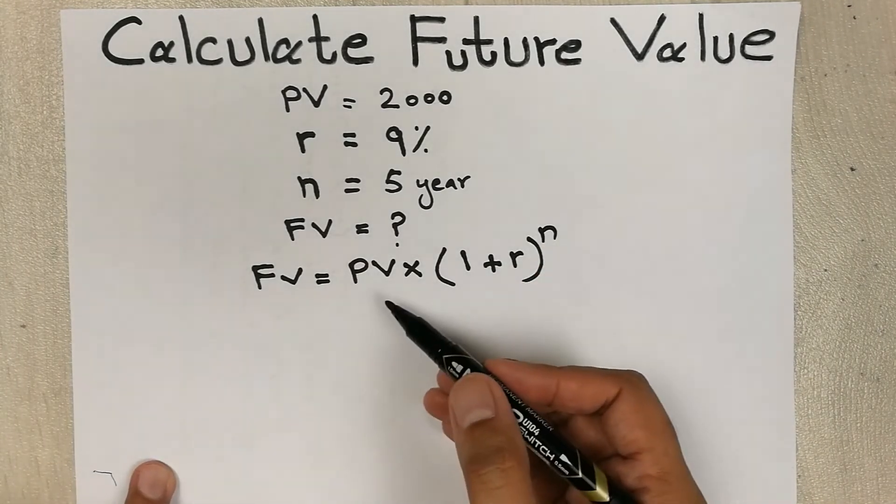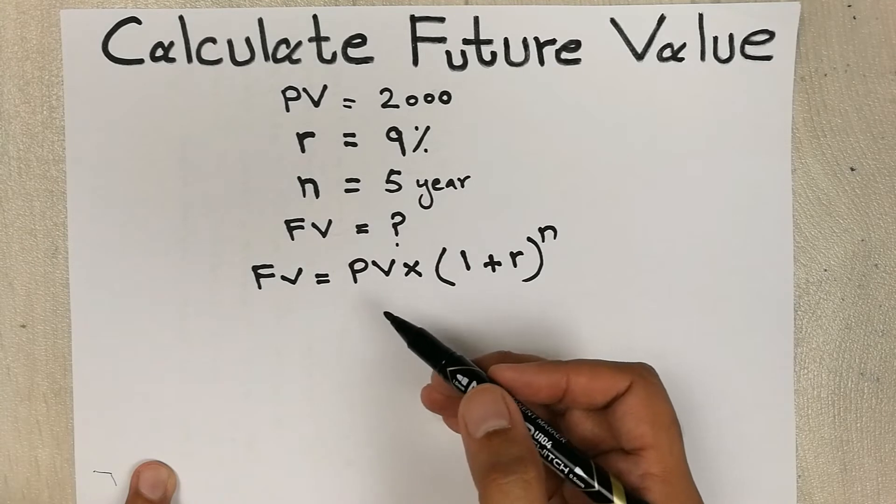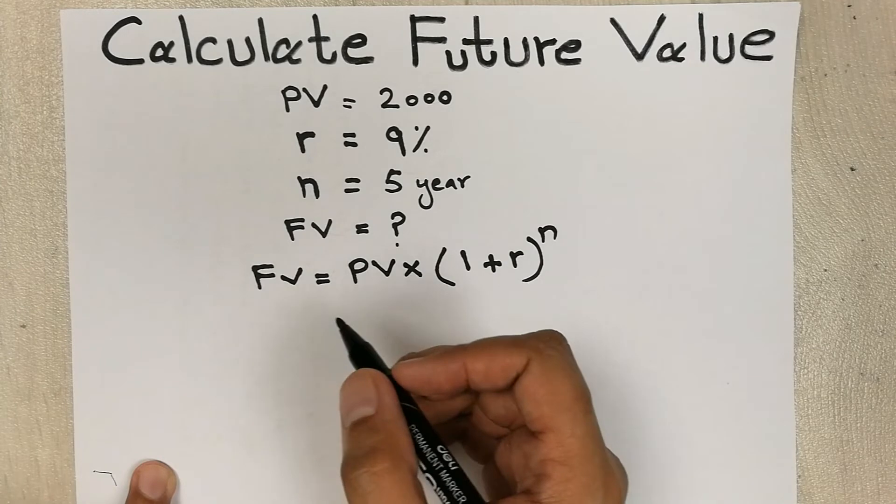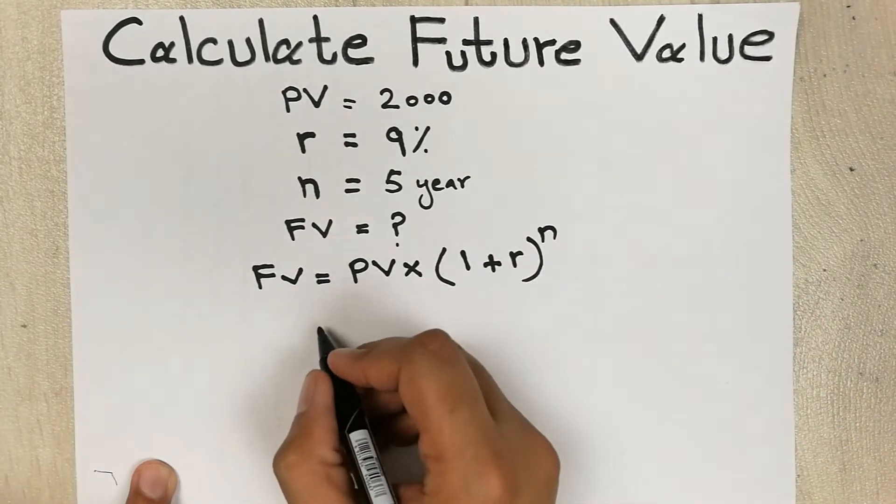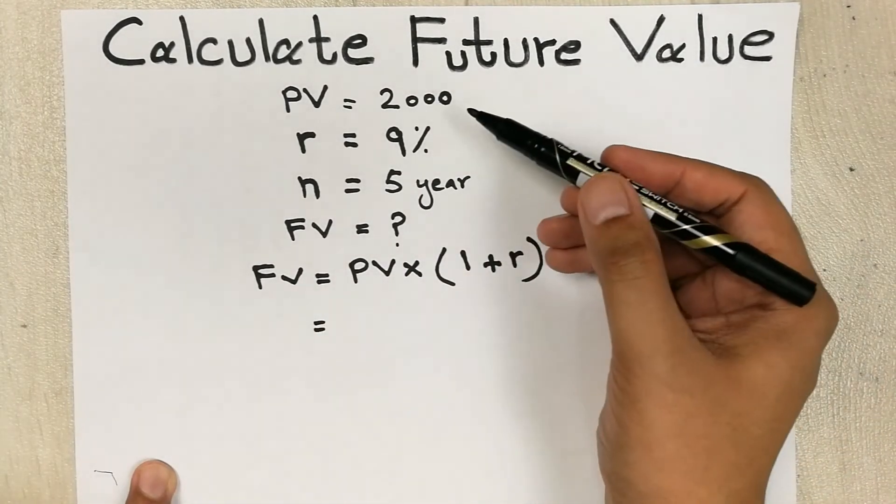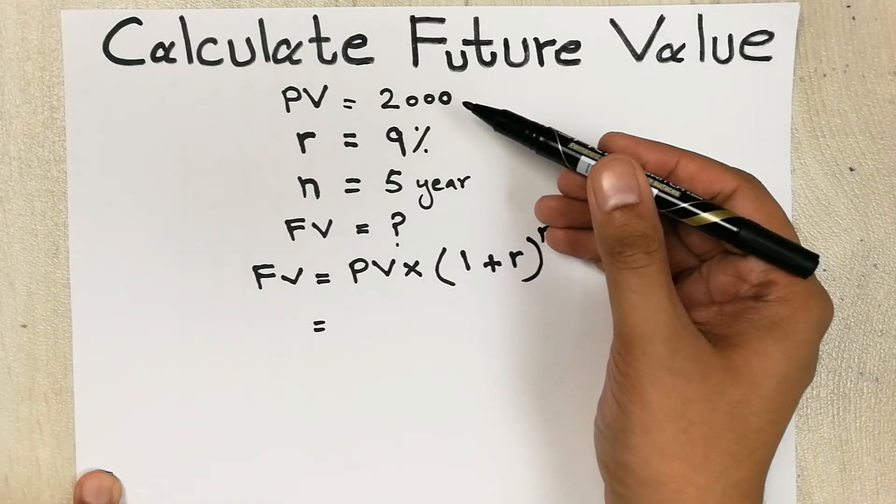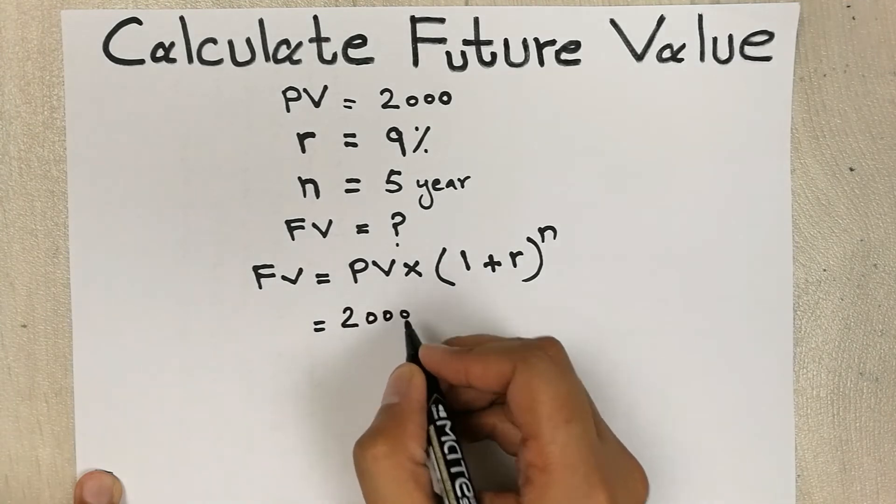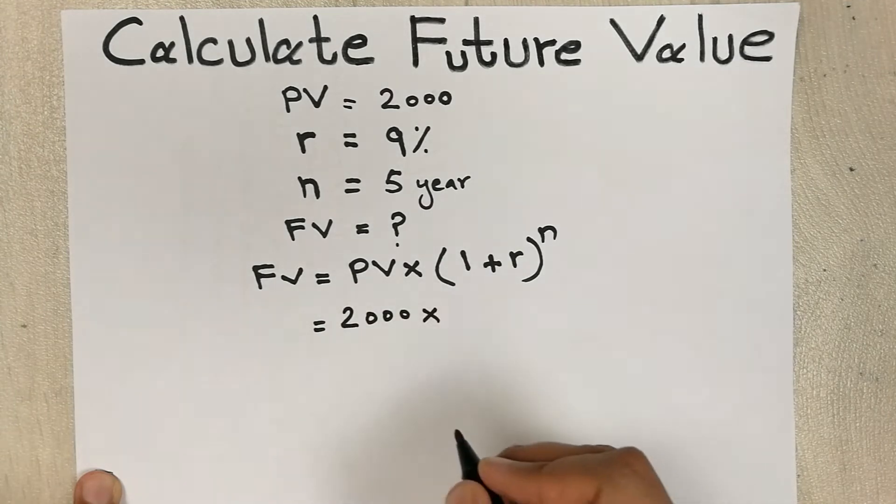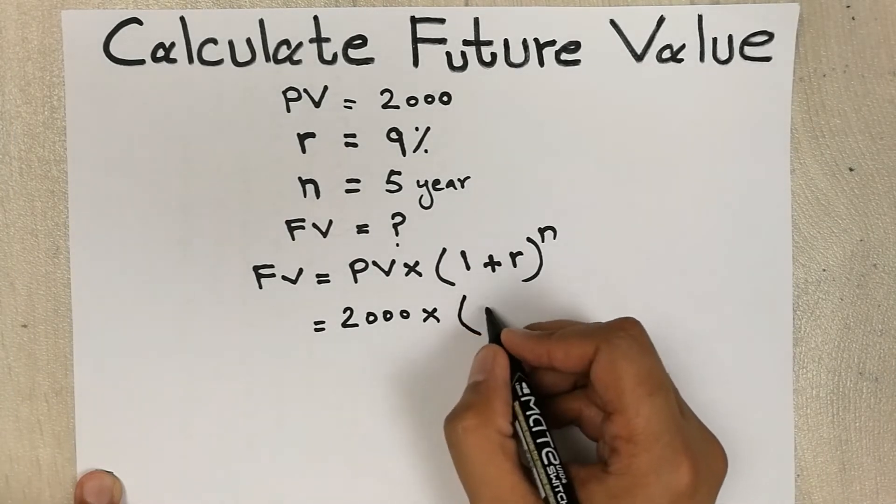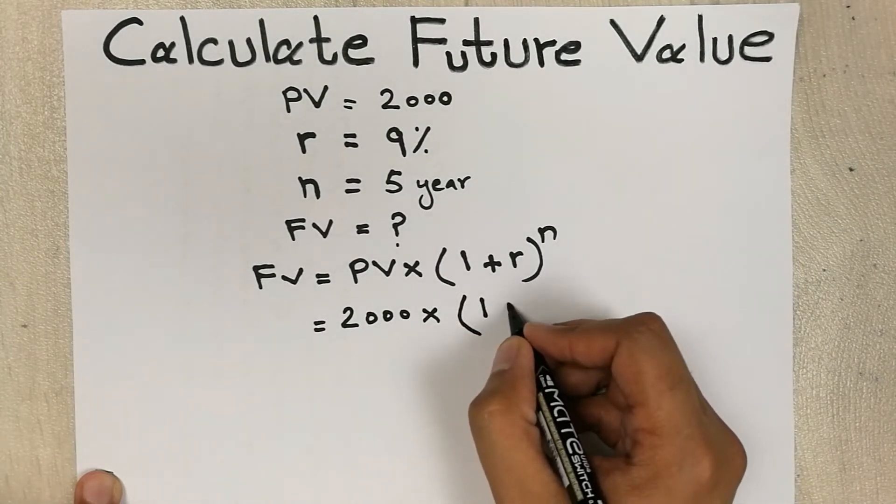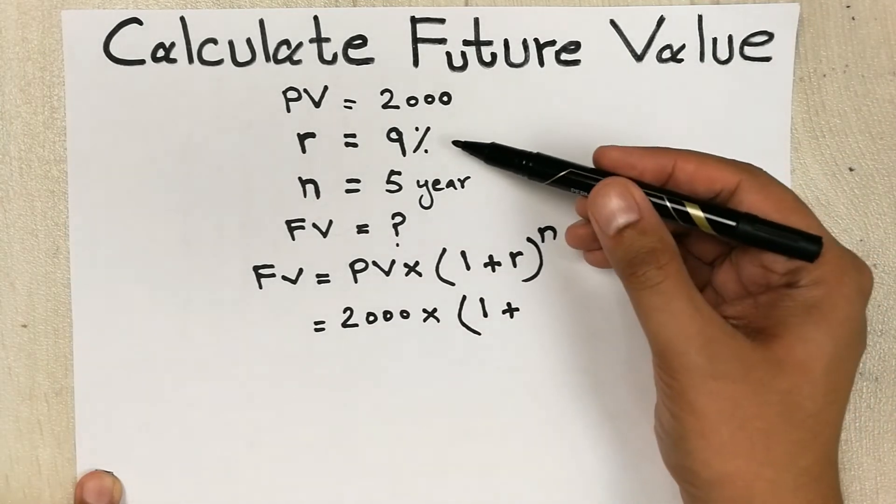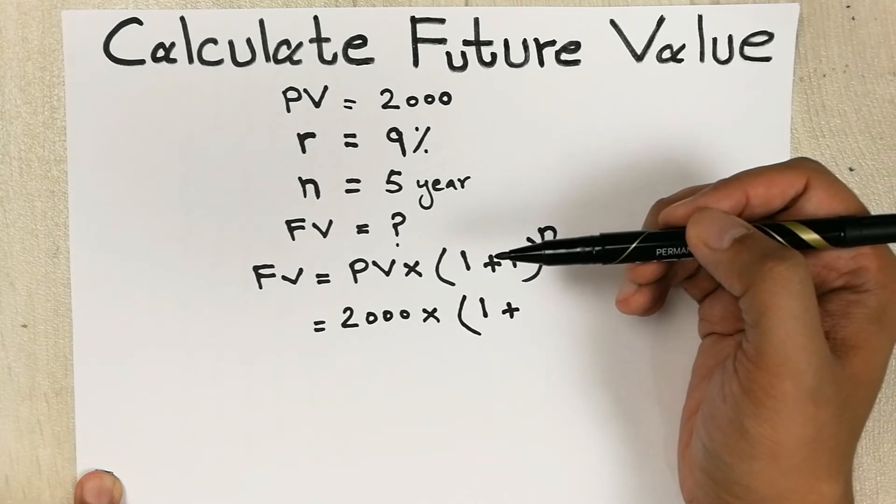This is the formula to find out the future value. Now we can simply put these values in this formula. PV, which is our initial balance or initial investment, is two thousand dollars, so we put here two thousand, then multiply, then we put the bracket.